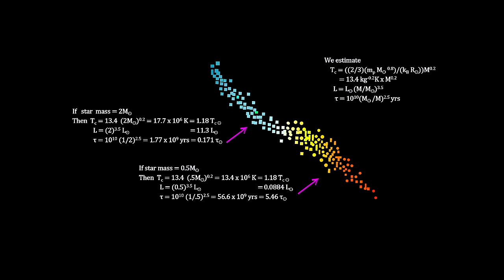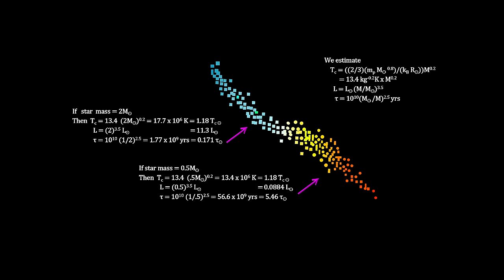In the other direction, we see that stars with half the mass of the sun have less than a tenth of the luminosity and remain on the main sequence 5 times longer. At the extremes, we have theta 1 Orionis C in the Trapezian cluster at 33 times the mass of the sun. Its luminosity is over 200,000 times greater than the sun, and it won't last more than a few million years.